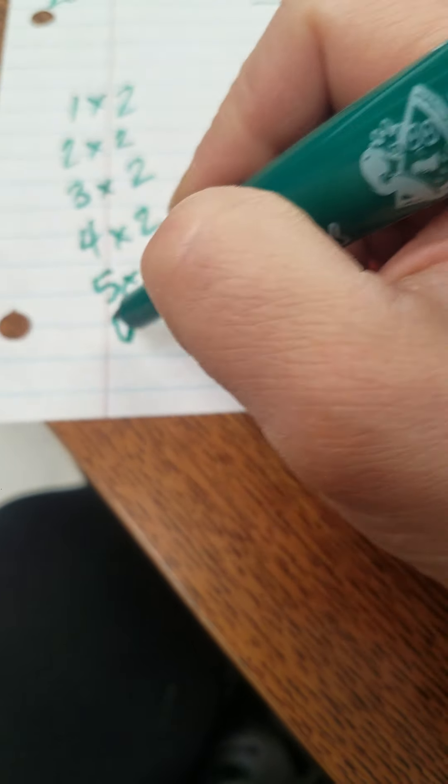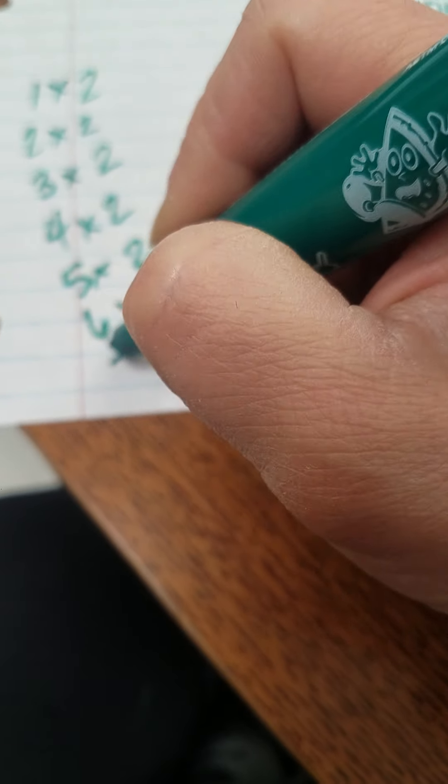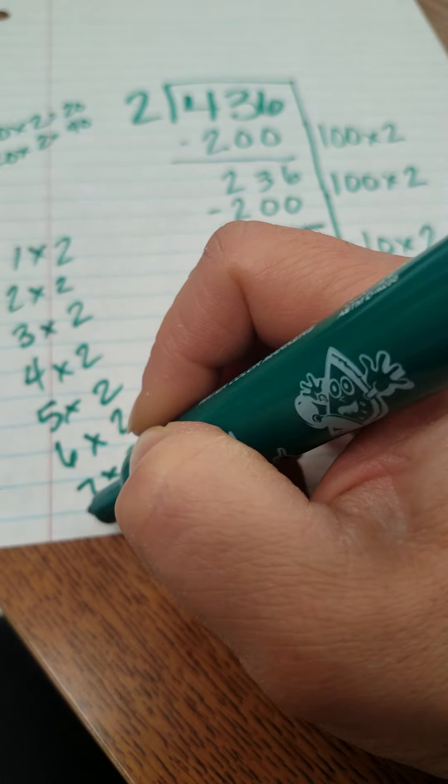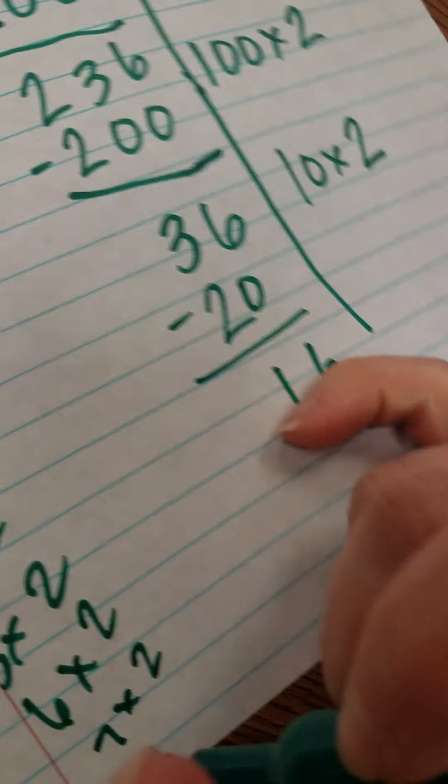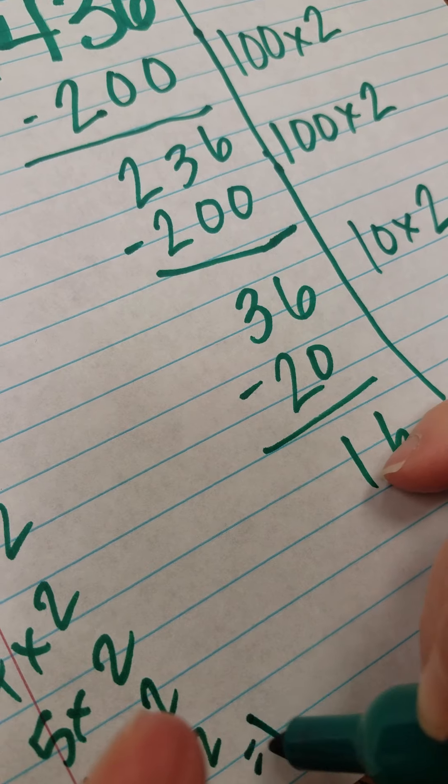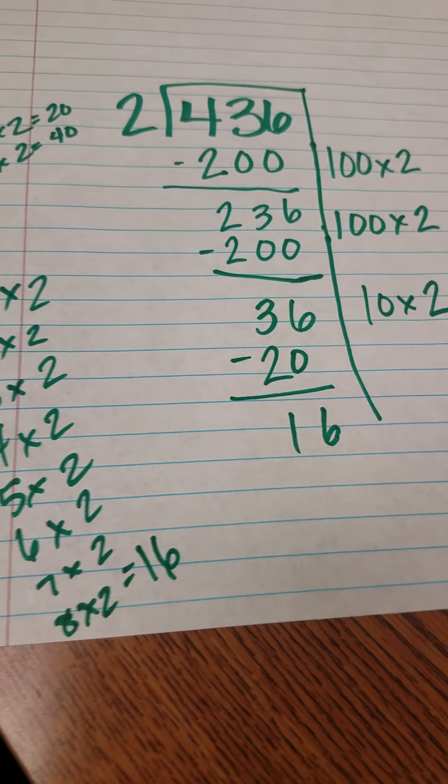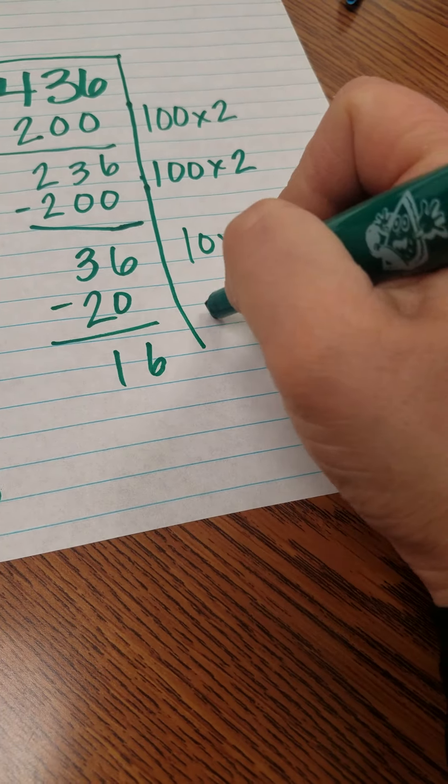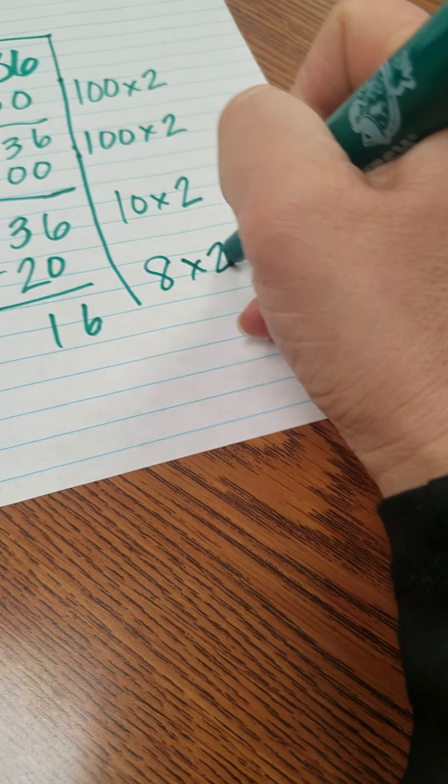Well I know my facts of 2, my doubling facts, and I know that 8 times 2 equals 16. So what I'm going to do is I'm going to write over here on the side 8 times 2 is 16 and I have 0 left over.